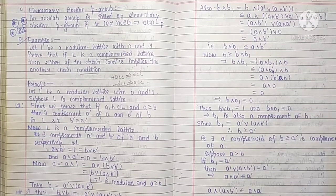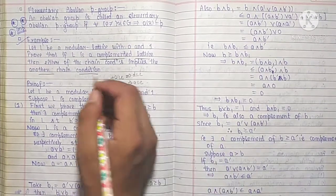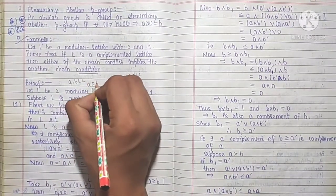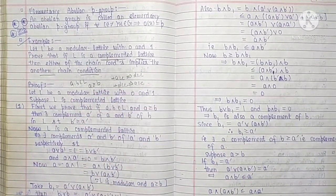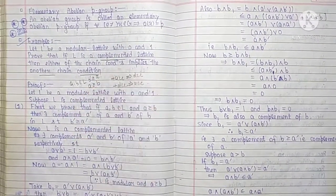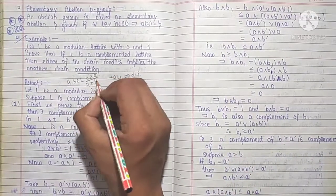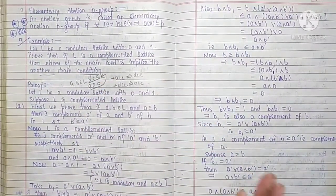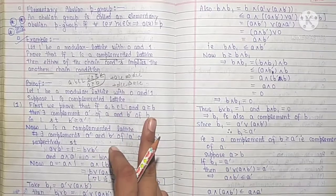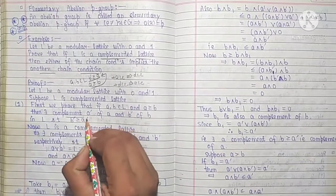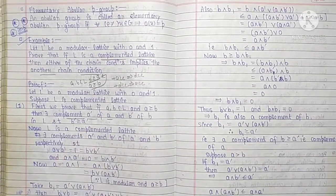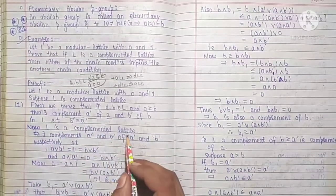To prove this, we will first prove a lemma: if A and B are two elements of the lattice such that A is related to B (A ≤ B), then when we take their complements, the complement relation will be reversed — B' is related to A' (B' ≤ A'). First we prove that if A and B belong to L such that A ≤ B, then there exist complements A' of A and B' of B in L such that B' ≤ A'.